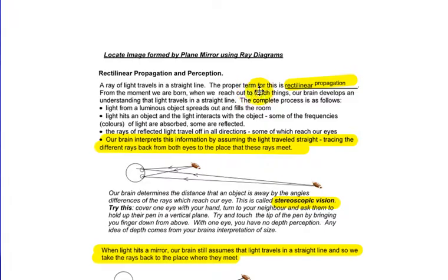A ray of light travels in a straight line. This term is referred to as rectilinear propagation. From the moment we are born, when we reach out to touch things, our brain develops and understands that light travels in straight lines. To complete the process: light from a luminous object spreads out and fills the room. Light hits an object and the light interacts with the object. Some of the frequencies are absorbed, others are reflected. The rays of reflected light travel off in all directions, some which reach our eyes. Our brain interprets this information by assuming that light travels in straight lines, tracing the different rays back from the eyes to the place that these rays met.